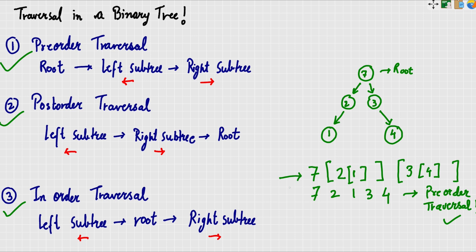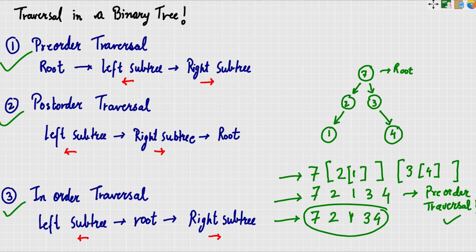Let's quickly trace: take 7 first, then left sub-tree with 2 and 1. Left sub-tree solve first — 2 is root, then left sub-tree nothing, 1 is root, then right sub-tree 3. We will see all things with code and focus on the concept. I hope you liked this video and understood what traversal is. We will also do the code and see traversal in practice.